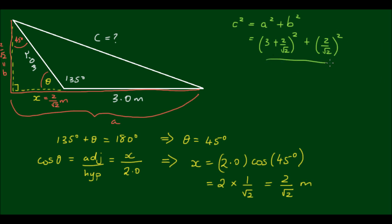This equals C squared. To get C, I take the square root of this value. So C equals the square root of (3 plus 2 divided by root 2) squared plus (2 divided by root 2) squared. I can simplify this further, but as it is, it's good enough to plug into a calculator.